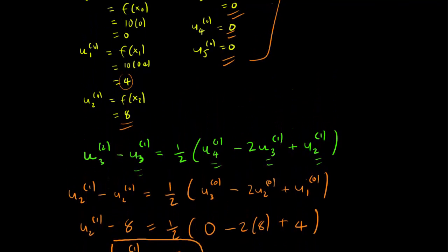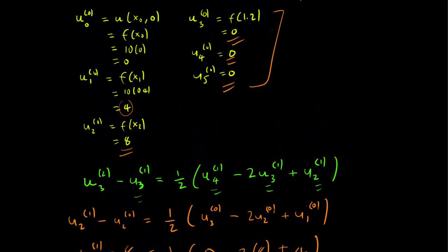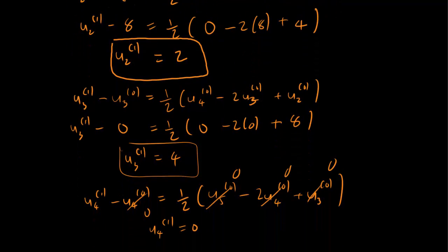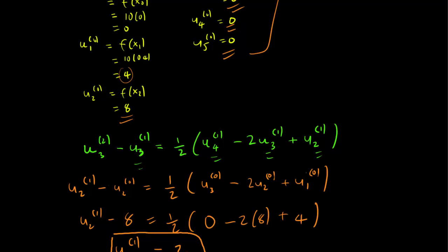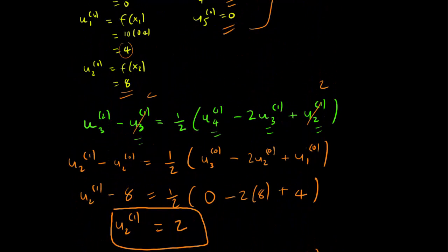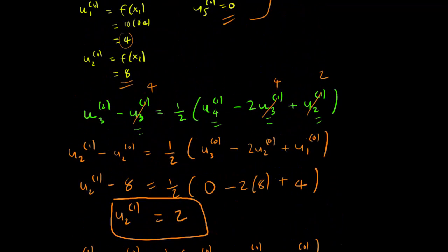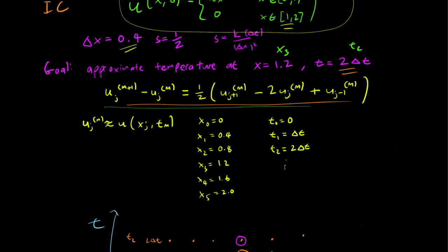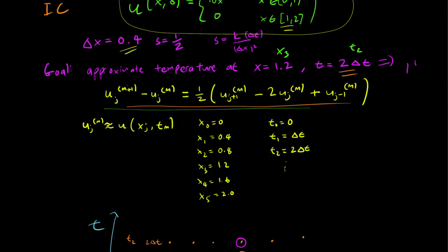This implies that for our equation here, we really know what u_4^1, u_3^1, and u_2^1 are. And we can plug them in to this equation. u_2^1 is 2, so this is 2. And u_3^1 is 4, so this is 4. And this is 4. And u_4^1 is 0, so this is 0. And we solve for this, you get that u_3^2 is equal to 1. And that is going to be our answer. So our approximate answer here is going to be 1 degree Celsius.